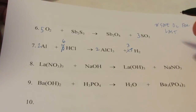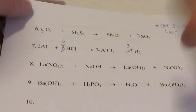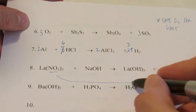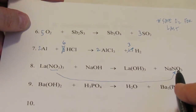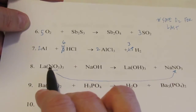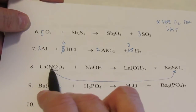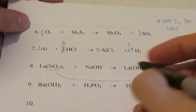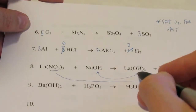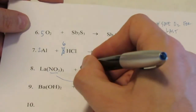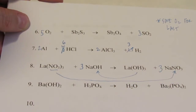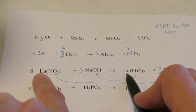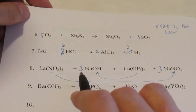Another little hint: polyatomic ions sometimes travel as a group, and when they do, you can balance them as a group. For instance, do you see how these three nitrates travel over to the product side? I have one nitrate here and three over there, so instead of balancing nitrogen and oxygen separately, I'll balance the nitrate ion — put a 3 there, giving three nitrates on both sides. Hydroxides do the same thing: three hydroxides here, one here, so put a 3 in front of NaOH. Now the sodiums balance — three and three — and so do the lanthanums. The mole ratio is 1:3:1:3.